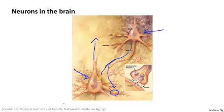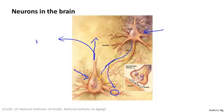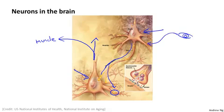This is also how our sensors and muscles work. If you want to move one of your muscles, a neuron sends pulses of electricity to your muscle, which causes it to contract. And if a sensor like your eye wants to send a message to your brain, it sends pulses of electricity to a neuron in your brain.